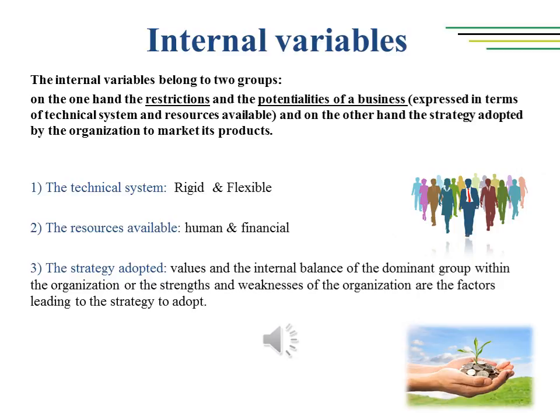The internal variables influencing the market function essentially belong to two groups: on the one hand, the restrictions and potentialities of a business expressed in terms of technical system and resources available, and on the other hand, the strategy adopted by the organization to market its products. The technical system: changes in production systems have an influence on the evolution of an organization's marketing approach, especially depending on the degree of rigidity or flexibility of the technical system. In the first case, it can bring about an increase of resources aimed at marketing information, so as to decrease the risks of poor choices and to define successful operative policies. In the case of high flexibility due mostly to the use of new technologies, the organization can vary the quality of its product and its supply and so reach a successful strategic cognitive marketing approach.